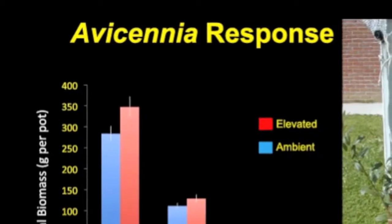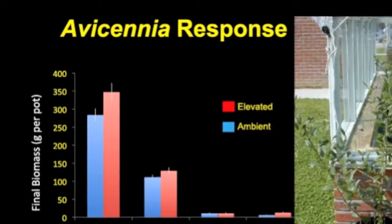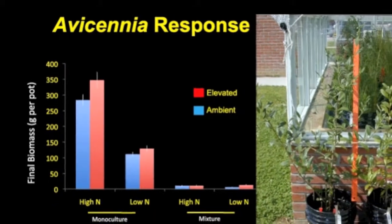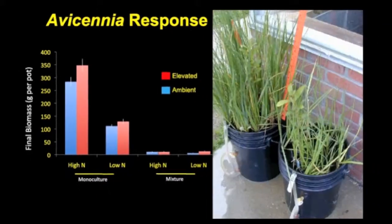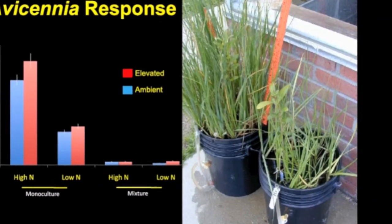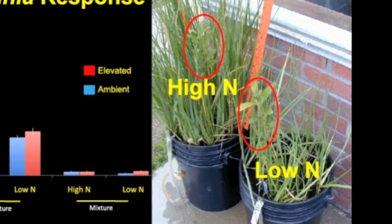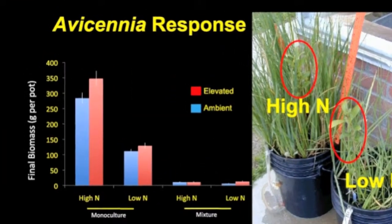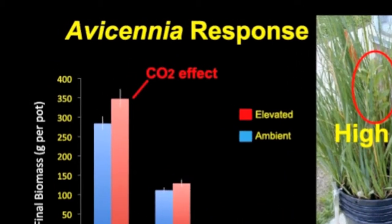Avicennia, however, showed a different response to the treatments. For this mangrove species, the greatest difference was between growth in monoculture and mixture. When grown alone, Avicennia grew to over one meter tall. However, when in mixture with Spartina, growth of Avicennia was strongly suppressed, and higher nitrogen, instead of helping Avicennia, enhanced the growth of its competitor Spartina. CO2 stimulated Avicennia's growth, but this occurred only when it was grown alone under higher availability of nitrogen.